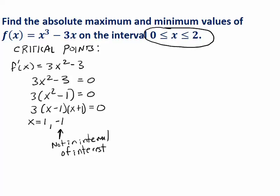Here's what I mean. We have a critical point when x is 1. So let's plug that into the original function. You get 1 cubed minus 3 times 1. So that comes out to negative 2.